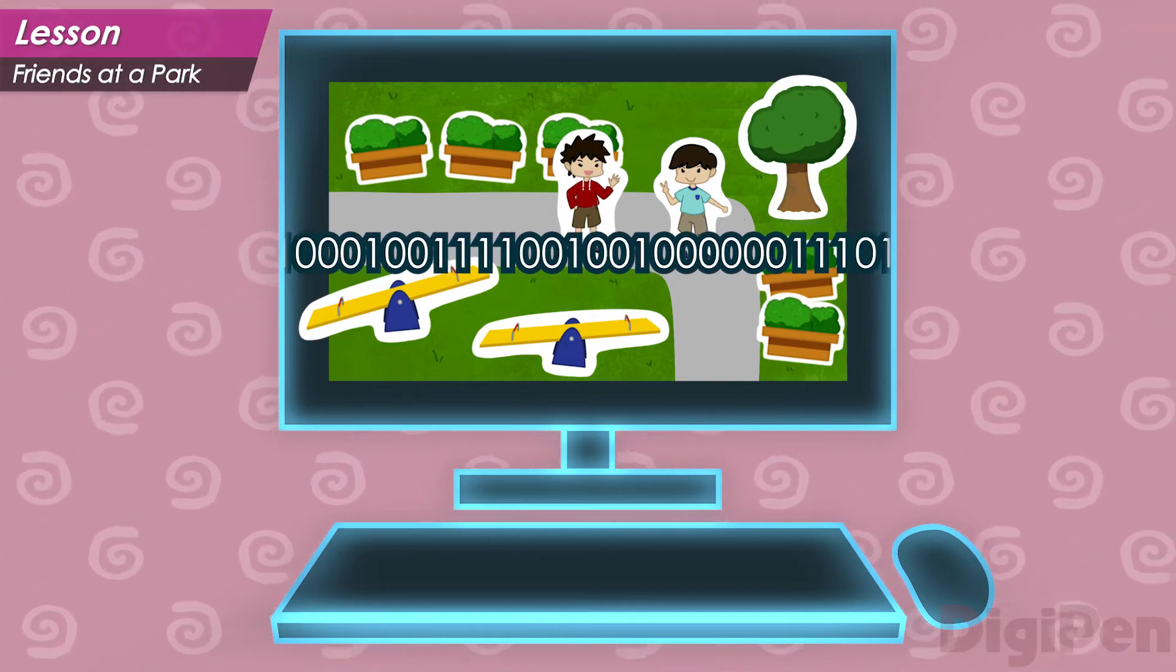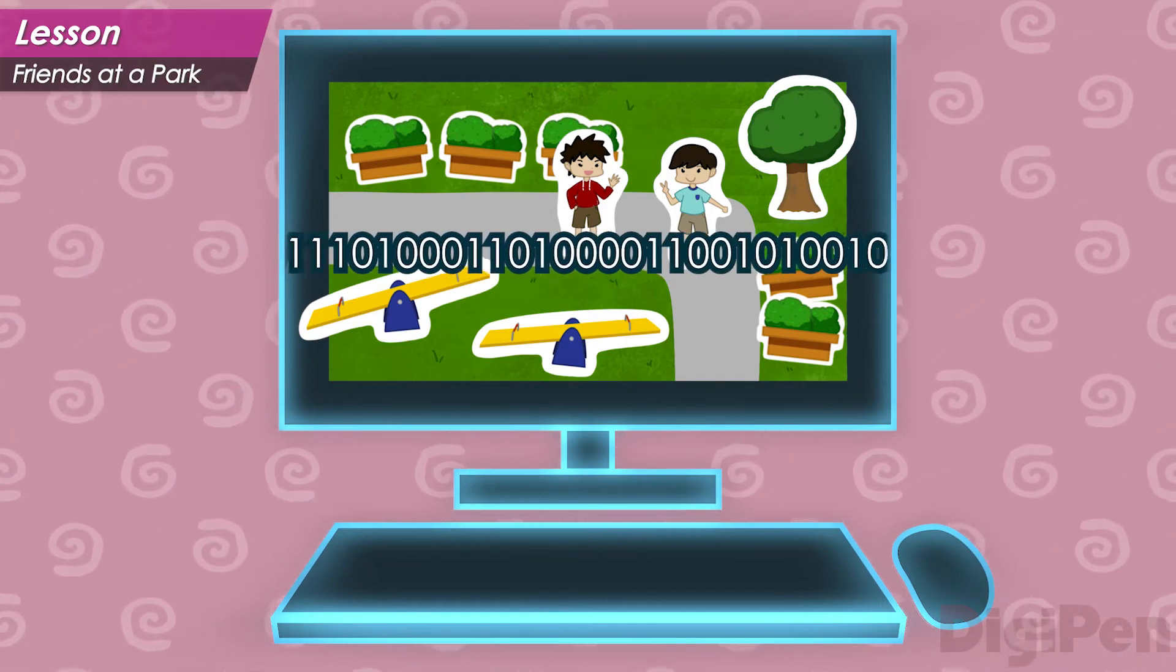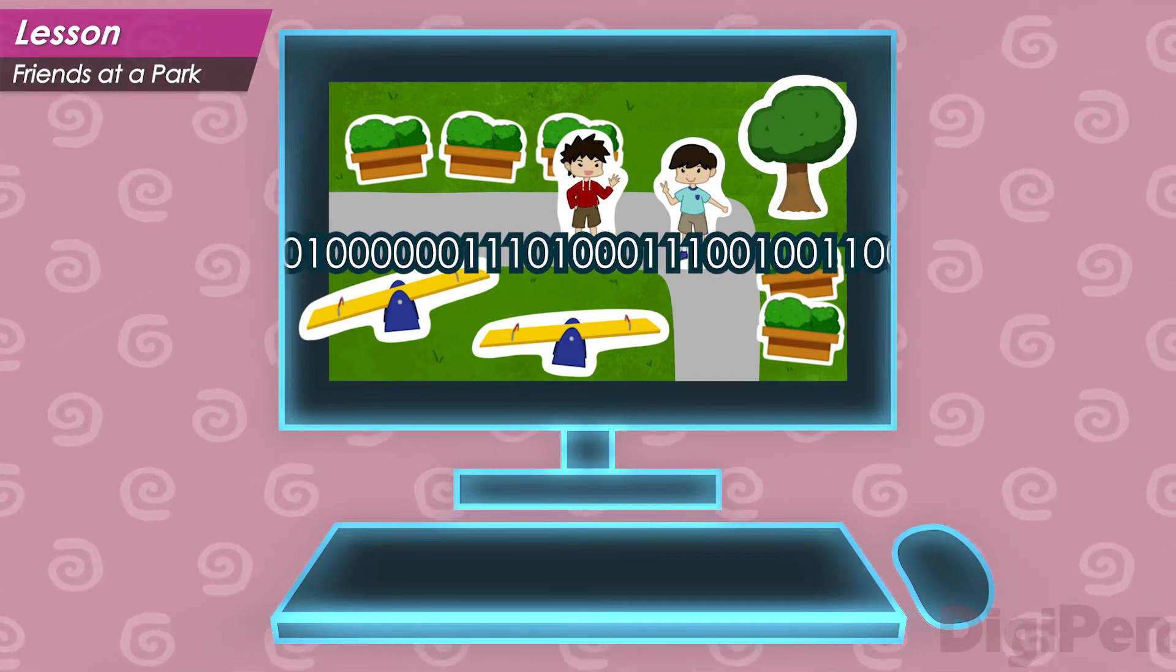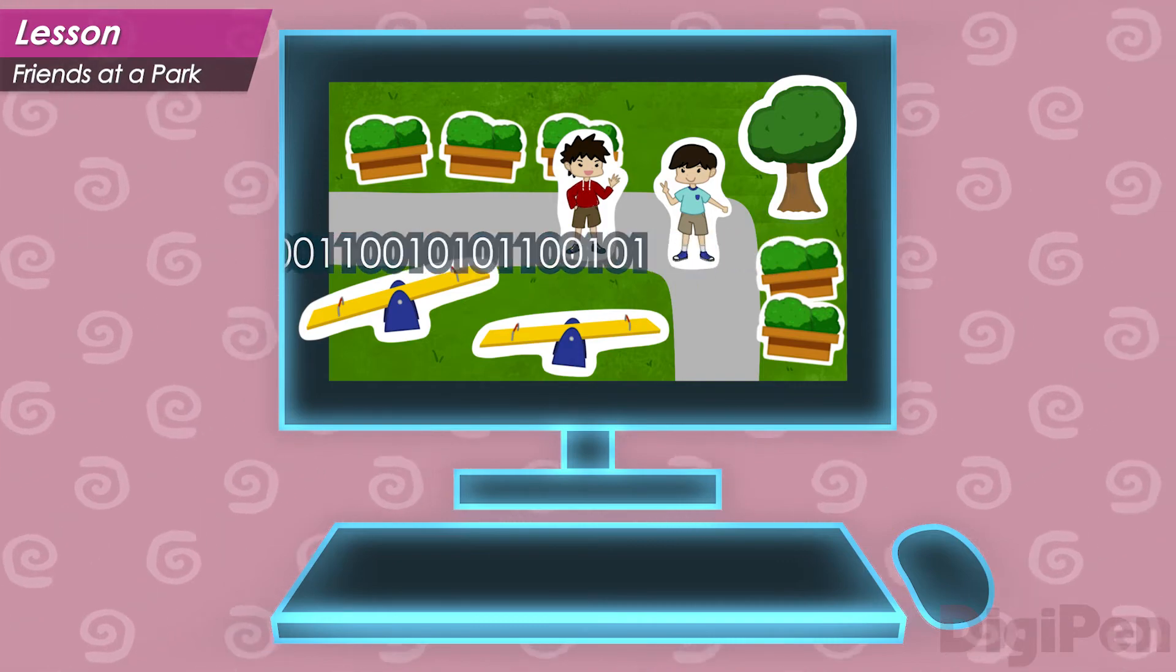Video games run on computers, and computers can only think in numbers. We need a way to use numbers to describe where your friend is. And thankfully, the Cartesian coordinate system will do just that.